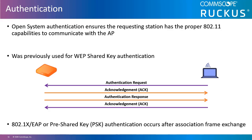This process was previously used to exchange wired equivalent privacy, or WEP, keys, which was deprecated in 2004 and should no longer be used. The authentication exchange proceeds as follows: first, an authentication request frame is sent from a client station to the access point; then an acknowledgement frame is sent from the AP to the client station; followed by an authentication response frame sent from the AP to the client station; and lastly, an ACK frame is sent from the client station to the AP.